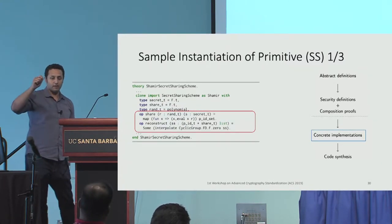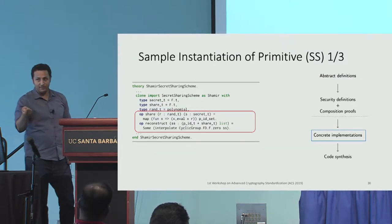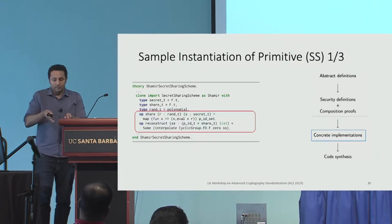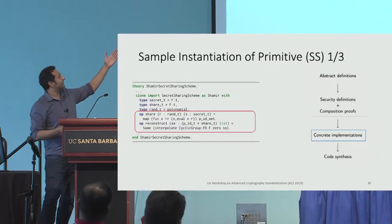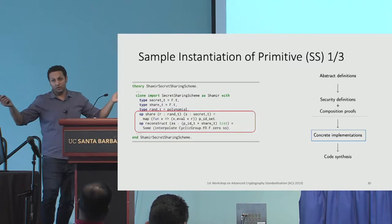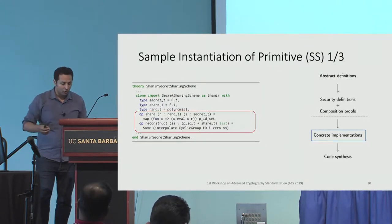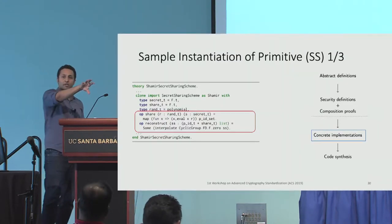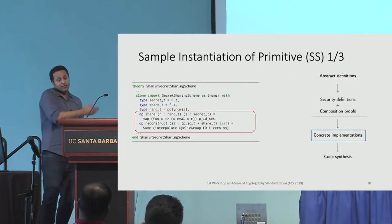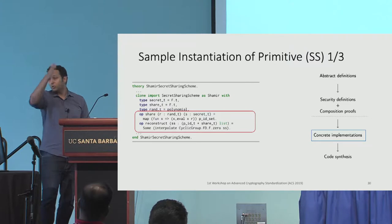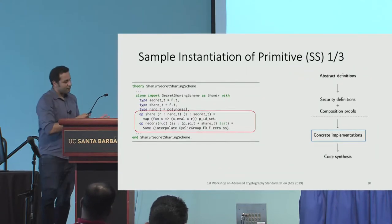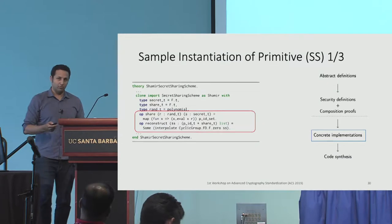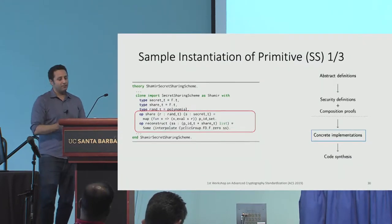I found that when formalizing things there are multiple ways to do the formalism, and each one can make your life later easier or harder — there's no right answer, it depends on experience and taste. At the BLS signatures talk someone mentioned making key sampling deterministic by passing in randomness without specifying how it's chosen. We encountered this same issue formalizing here: it's easier to pass the randomness as a polynomial with zero free term and add the secret. We have the same thing for additive secret sharing as a concrete implementation satisfying the abstract definition.